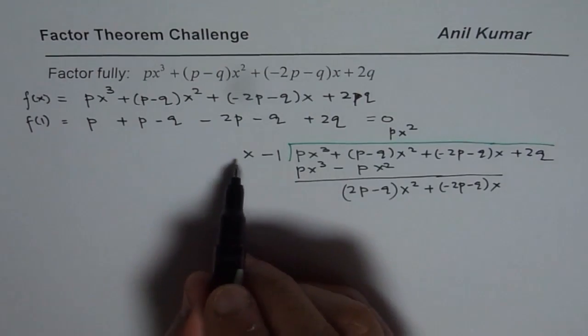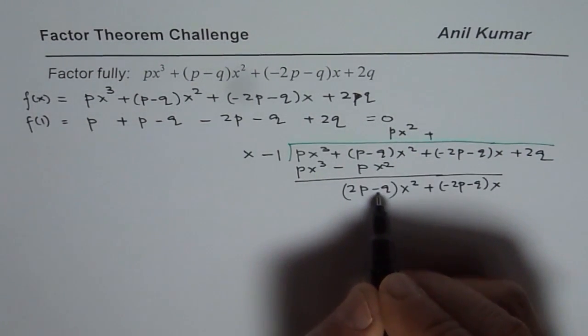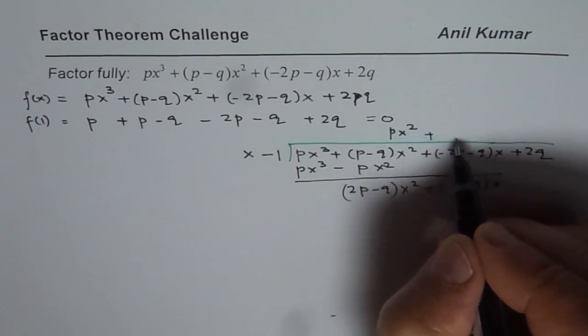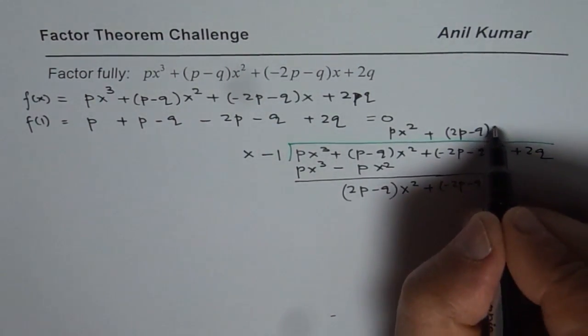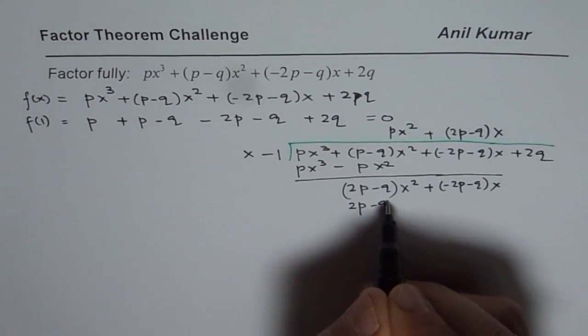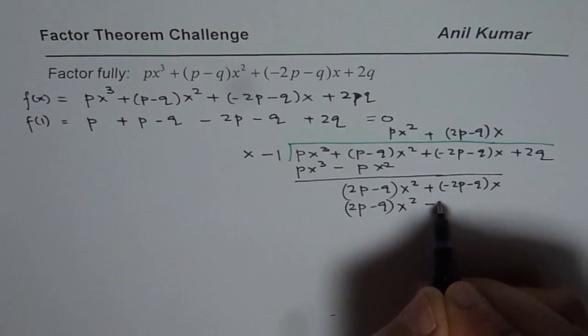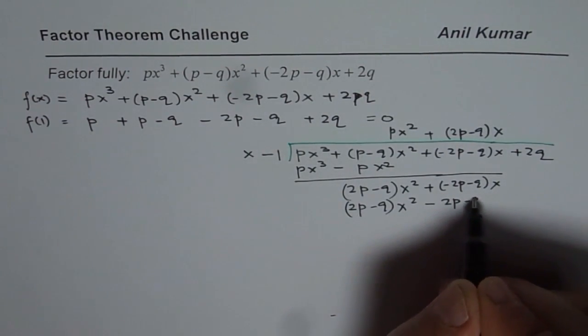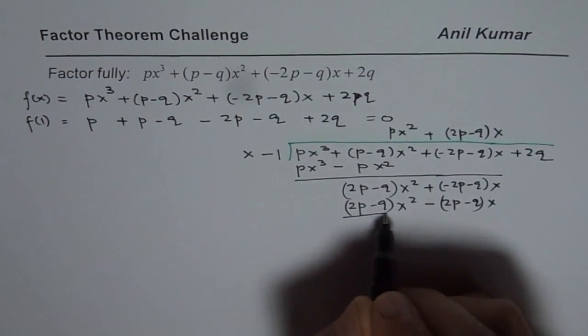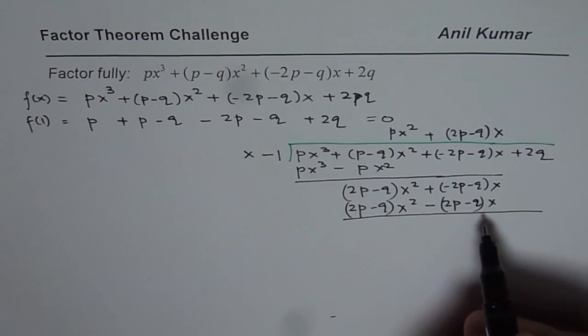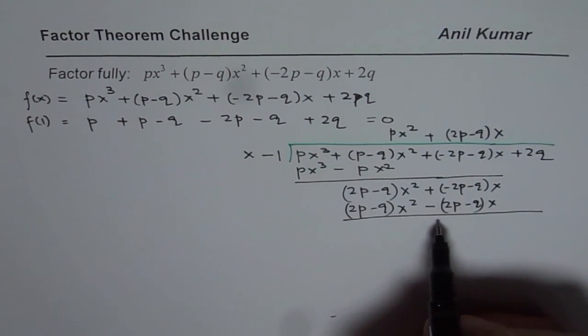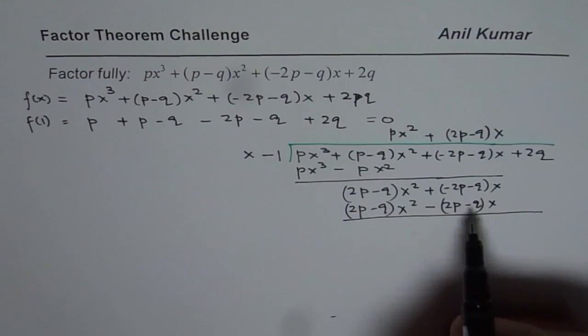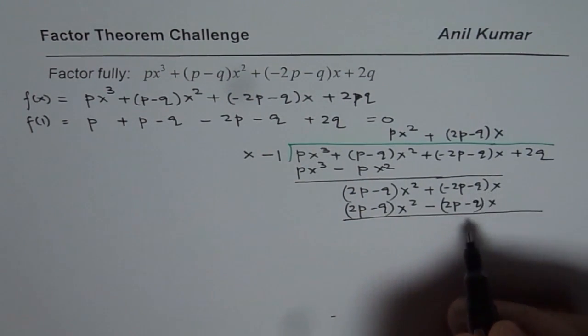we get 2p - q x². Bring down the next term, which is -2p - q x. Now, we need to multiply the term by (2p-q), right? (2p-q) times x to get x².